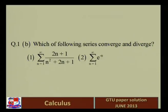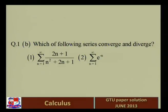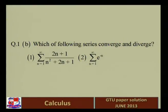The comparison test states: if Σuₙ and Σvₙ are two positive term series, and the limit as n → ∞ of uₙ/vₙ is finite and nonzero — neither zero nor infinite — then both series converge or diverge together. That means if one series is convergent, the second is also convergent, and if one is divergent, the other is also divergent.